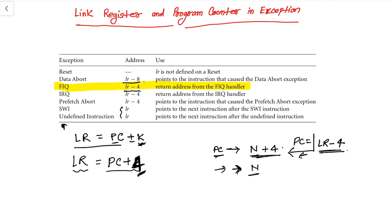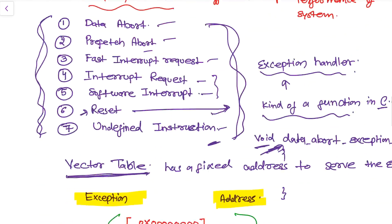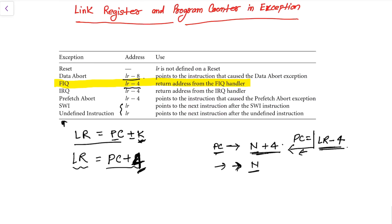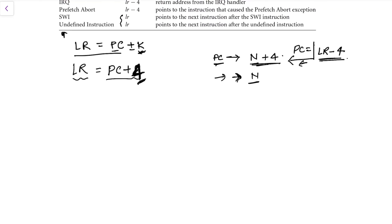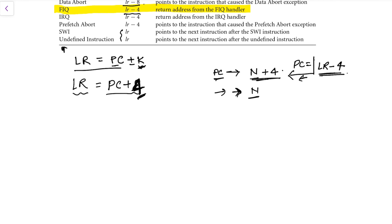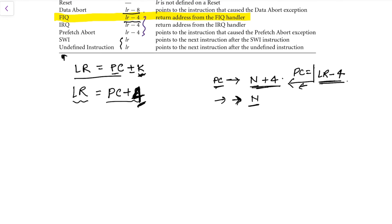We can understand this with an example. I am going to take an example where a handler occurs — let's say any of the FIQ, IRQ, or data abort handlers. The scheme I am going to show you applies to any of these three handlers. So let's say we have a label known as a handler, and here we have the handler code.